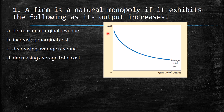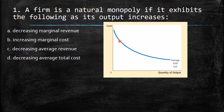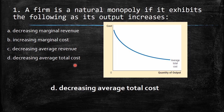This is the graph of a natural monopoly. We have cost on the y-axis and quantity of output on the x-axis. When they produce more and the quantity increases, automatically the average total cost decreases. So definitely the answer is decreasing average total cost.